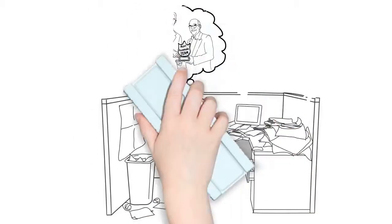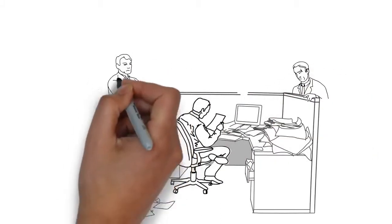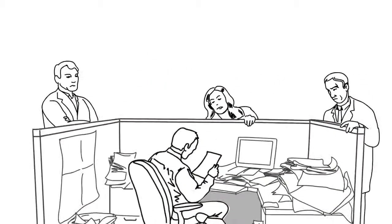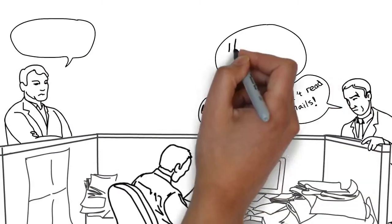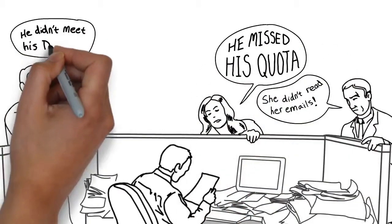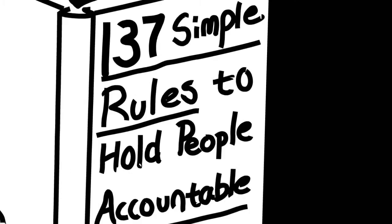Accountability tends to have a negative connotation because it ends up being punitive and a polite word for blaming. That's because we've all been taught to apply accountability after a relationship or project has failed.